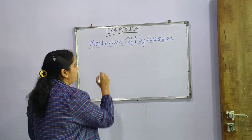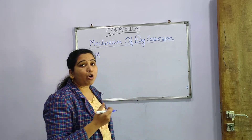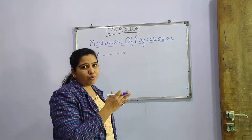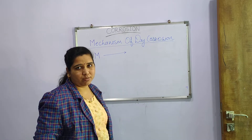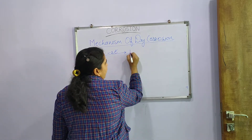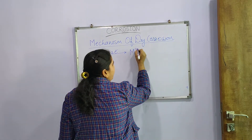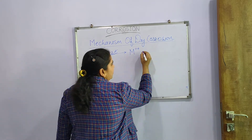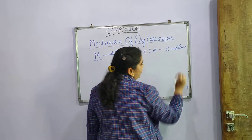First of all, we consider a metal M. This metal, when it undergoes the process of oxidation, loses an electron pair — so M, which was electrically neutral, becomes M²⁺ (dipositive). We have considered two electrons here. So there is formation of M²⁺ and these two electrons are produced. This is the process of oxidation, because oxidation is nothing but losing of an electron pair.